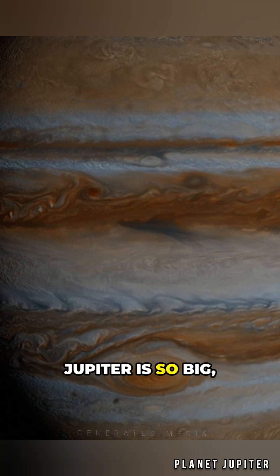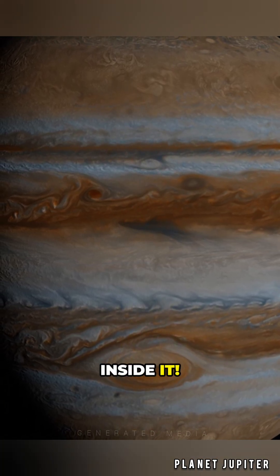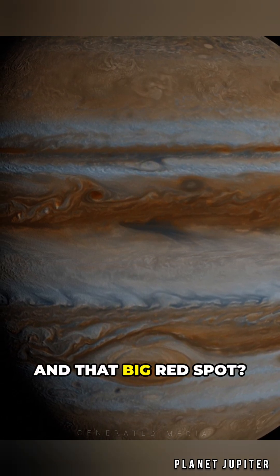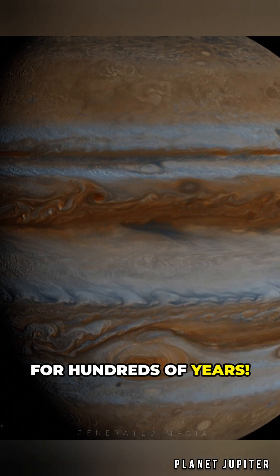Jupiter is so big, you could fit more than 1,300 Earths inside it. Its colorful clouds are made of gas, and that big red spot? It's a giant storm that's been raging for hundreds of years.